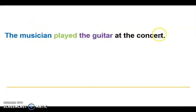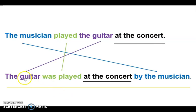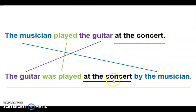To continue, we have an active voice sentence in simple past and it's your turn to write it as a passive voice sentence, also in simple past. Pausa el video unos segundos. The answer is: 'The guitar was played at the concert by the musician.' En esta ocasión tenemos 'at the concert' como un complemento de la oración, el cual puede ir ubicado en ese lugar o al final.